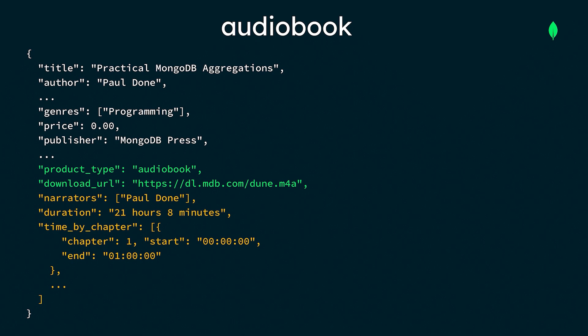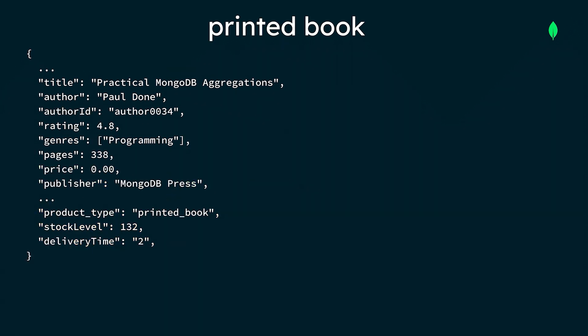The audiobook entity has a slightly different shape than the ebook entity. Now let's review our last book type, printed book. Both the audiobook and the ebook entities contain a download URL, which doesn't make sense for a printed book. As a result, we removed this field from the printed book entity and added print-specific fields such as the stock level and delivery time.